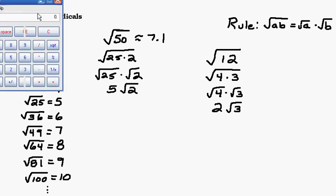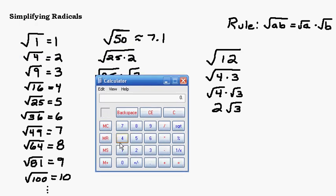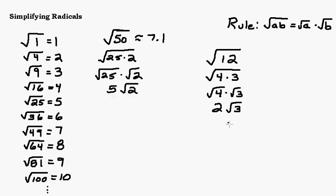Let's check it on the calculator. This isn't always going to guarantee that it's perfect, but it's a pretty good check. The square root of 12 is about 3.46. So now if I do 2 times the square root of 3, I get 3.46. Same value, just expressed differently.